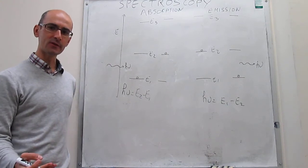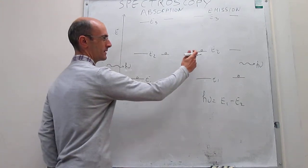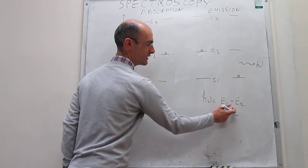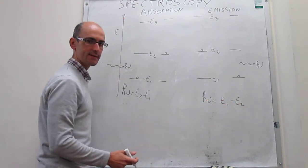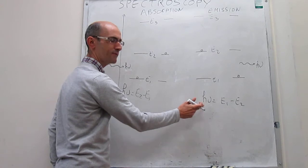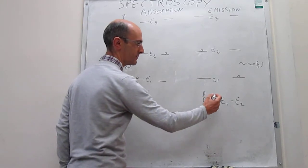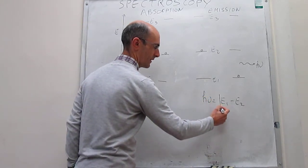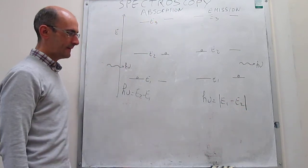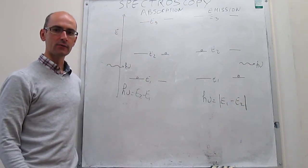Something interesting about emission spectroscopy is that because the system is losing energy, this difference in energy is negative, which would mean the photon has negative energy — but photons can never have negative energy. So when we talk about emission spectroscopy, we use the absolute value of those energies.